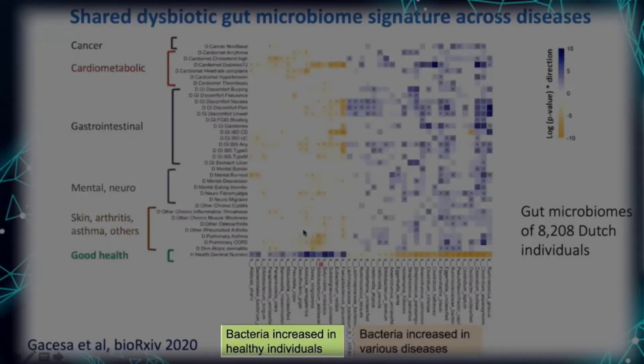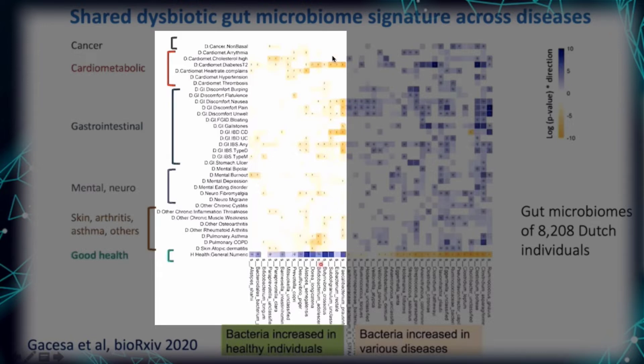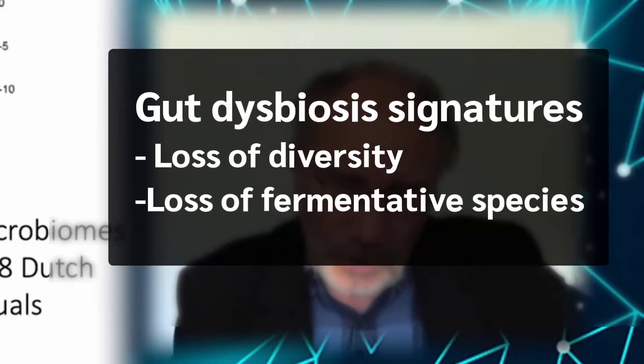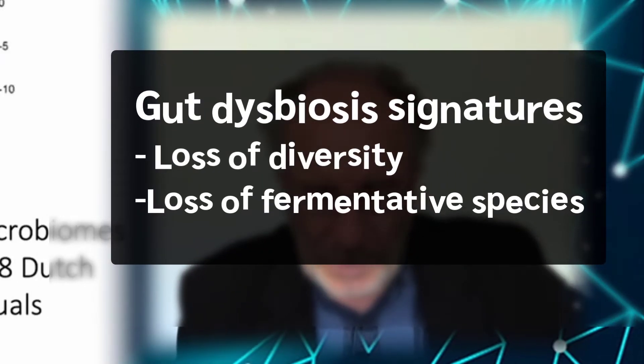And you can see here that the changes are not that different from disease to disease. That is a spectrum — a general spectrum of dysbiosis. And this general spectrum appears to be loss of diversity and loss of fermentative species, which is the conclusion of what we have seen until now.